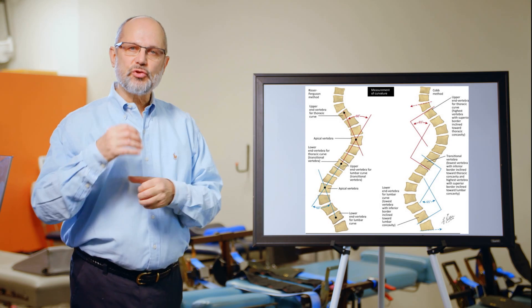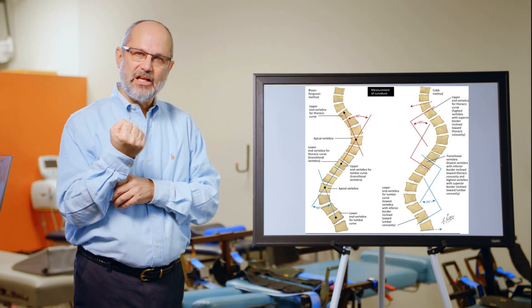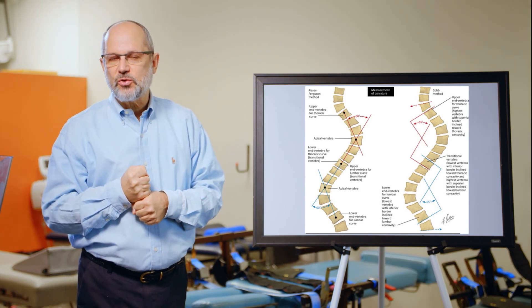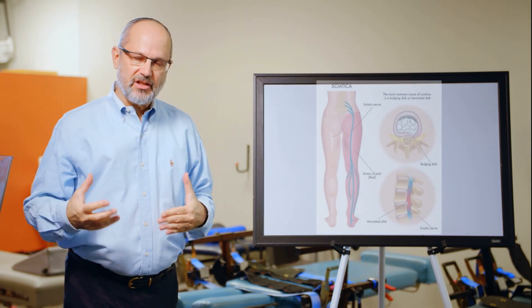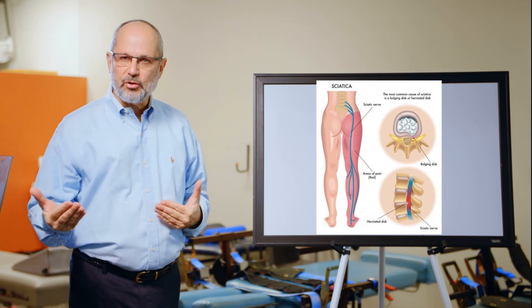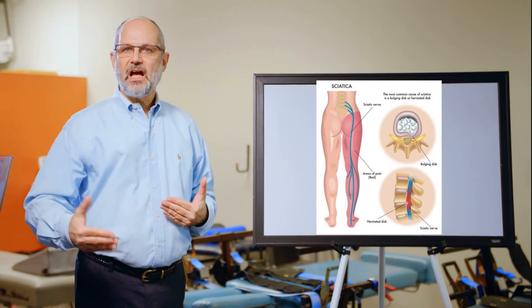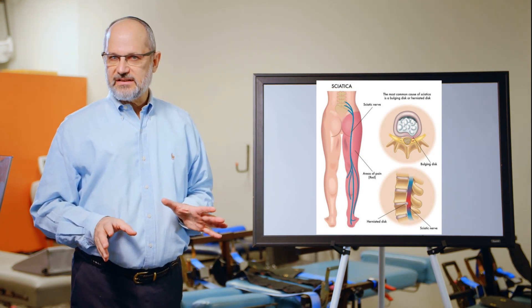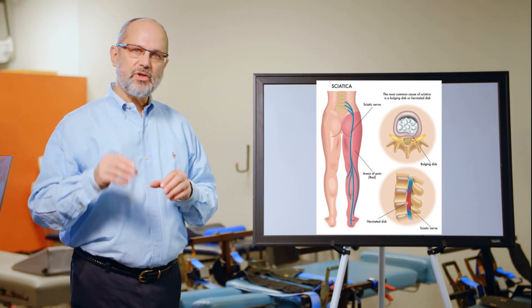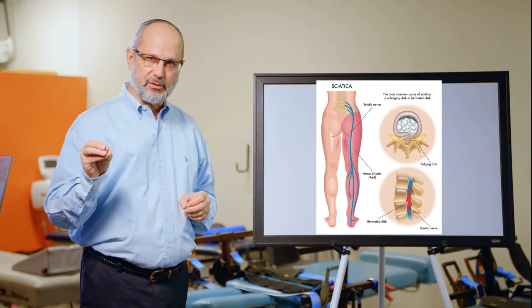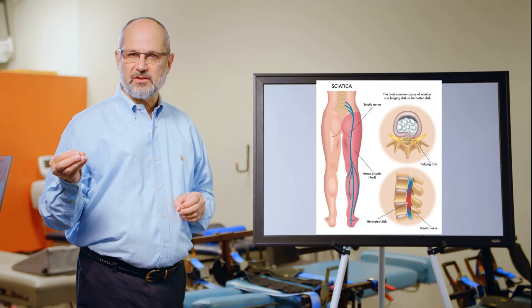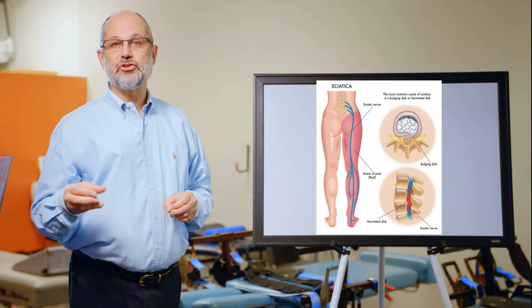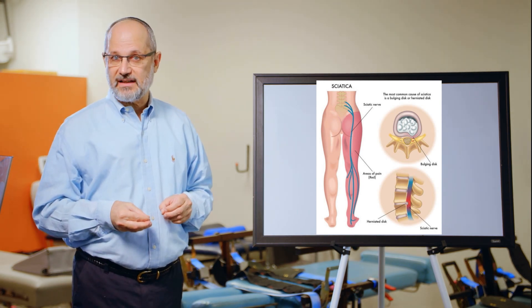Once the spine has the rotational element intensified in rotoscoliosis, there's a torsion that takes place in the disc. Once rotation gets above around 20 degrees, that torsion can cause displacement of the disc. We refer to this as a disc bulge, herniation, protrusion, prolapse, or in very severe cases, a disc extrusion—where a small fragment of the disc will break off and float in the spinal canal. Depending upon where that fragment rests will determine whether surgery is necessary.